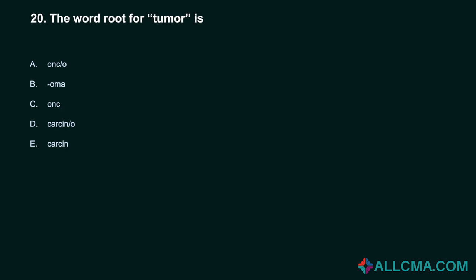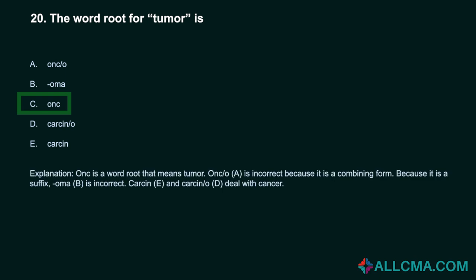Question 20: The word root for tumor is: a) onc/o, b) -oma, c) onc, d) carcin/o, e) carcin. Correct answer: C, onc. Onc is a word root meaning tumor. Onc/o is incorrect because it is a combining form. -Oma is incorrect because it is a suffix. Carcin and carcin/o deal with cancer.